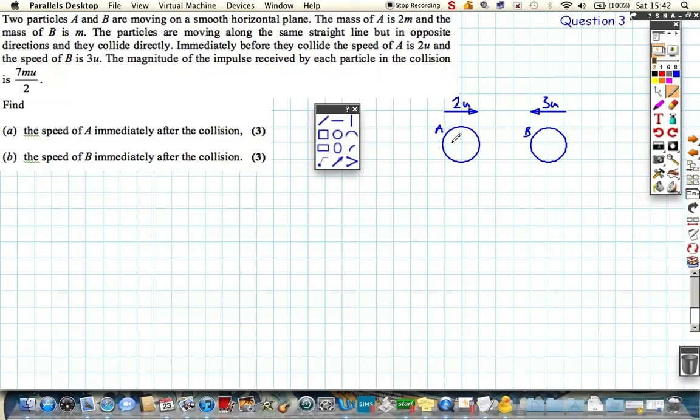The mass of A is 2m and the mass of B is m. After the collision, we don't know what's going to happen but we know there's an impulse that they receive. Let's presume that the motion of A is unchanged and B is reversed. So A carries on with speed x and B is now going at speed y.